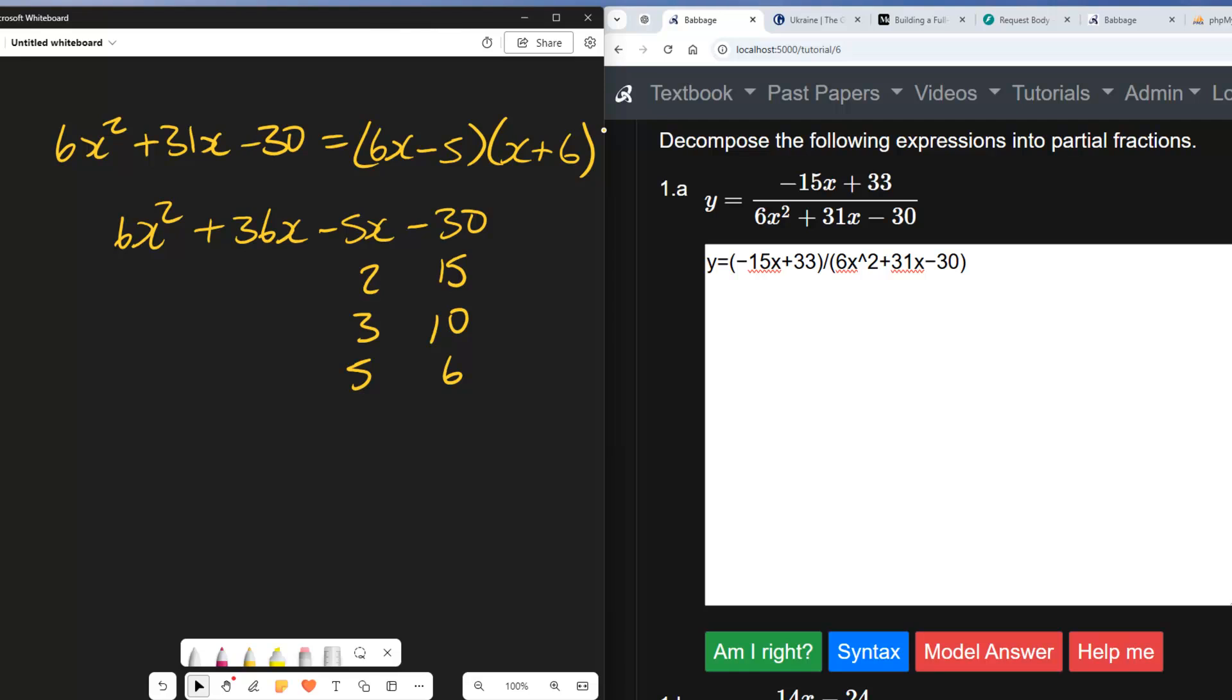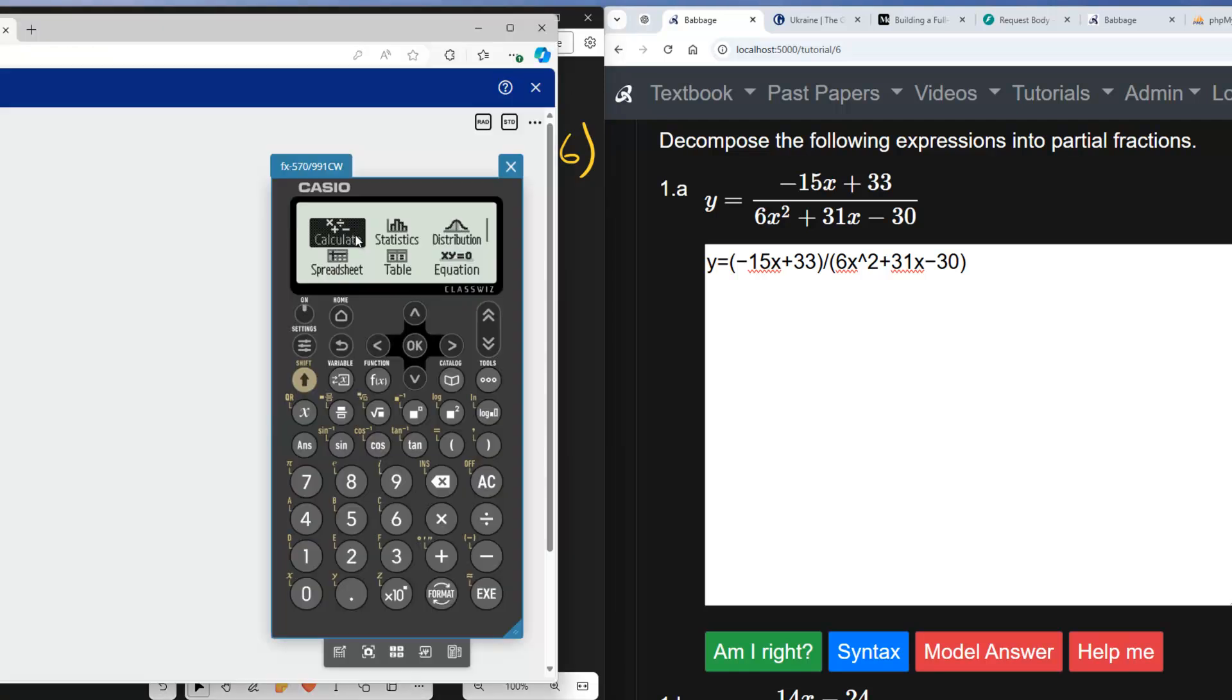Now what I'd like to do is to repeat that process but not doing it by inspection, doing it using a calculator. This is the Casio 991. So I'm going to move to equations, and I'm going to solve a polynomial. And it's going to be a quadratic. So the numbers are going to be 6, 31, and minus 30. Click execute again.